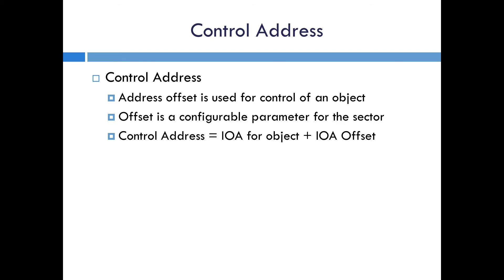The control address specifies the particular ASDU being controlled. Note that the point being controlled and the monitored point that reads back that the control happened will have different addresses. This is handled in the Triangle Microworks test harness by defining an offset between the control point and the monitored point. In the sample database we use a fixed offset between the control object and the monitored object, though that's not required by the specification. The only requirement is that the two addresses have to be unique — for example you could have control point 7 and monitor point 102. They just have to be different, not necessarily a fixed offset.